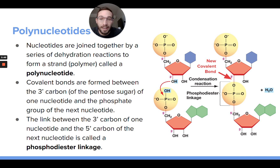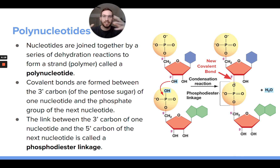That involves dehydration synthesis reactions, which join monomers together. Specifically, we're making a bond between the phosphate group of one nucleotide and the 3-prime carbon on the pentose sugar of the other nucleotide. You form this new covalent bond — we call this a phosphodiester bond, or refer to this region as a phosphodiester linkage, joining these nucleotides together in a DNA strand.